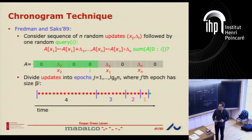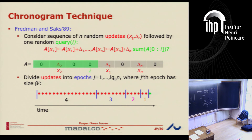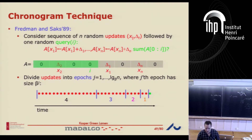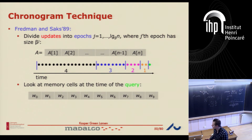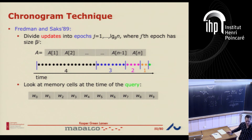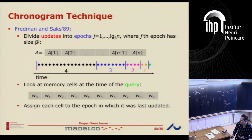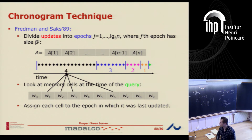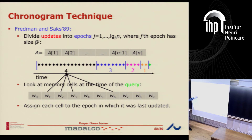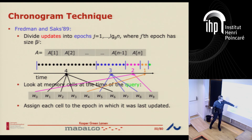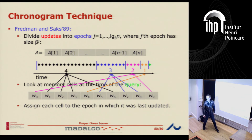When proving lower bounds, we divide this timeline into epochs. You have log-base-beta-of-n epochs of size beta^j each — exponentially increasing in size. Epoch 1 is closest to the query, and as you go back in time, the epochs get bigger. The idea is: when you look at the memory contents of the data structure at query time, you take these cells and color them based on the epoch in which they were last updated. Cells updated in epoch 4 but not 3, 2, or 1 are colored black; cells last updated in epoch 3 are a different color, and so on.